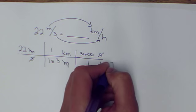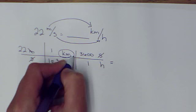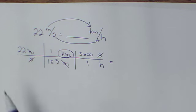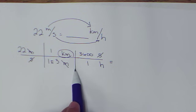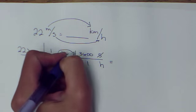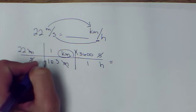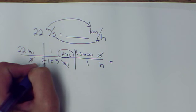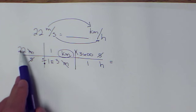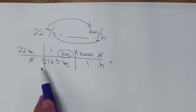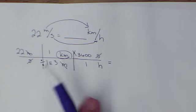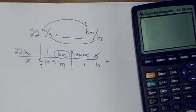Seconds cancel, and I'm left with kilometers on top. Yay me. Hours on bottom. Yay me. So I've got to put all of this into my calculator. I can ignore the ones, and as long as I hit times in front of 3,600 and divided by in front of 1E3, it doesn't matter what order I put this in. I can say 22 times this, divided by this, or 22 divided by this, times this.